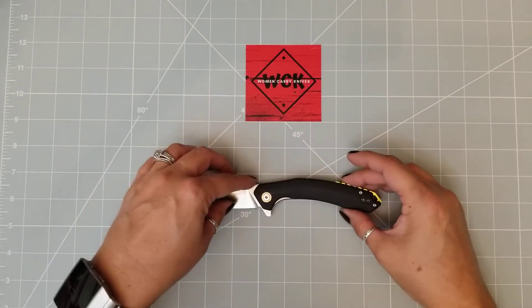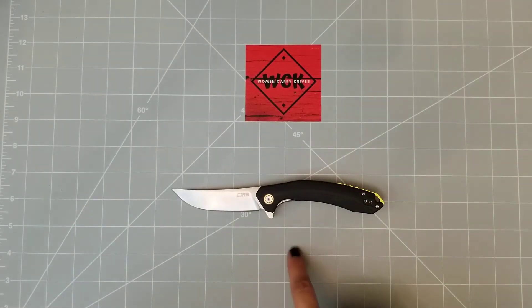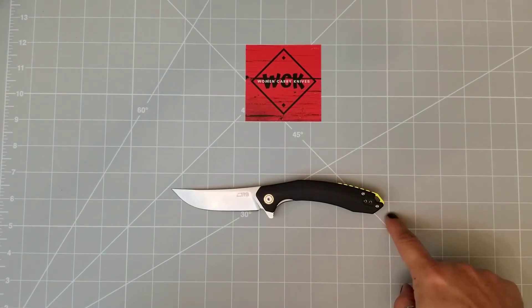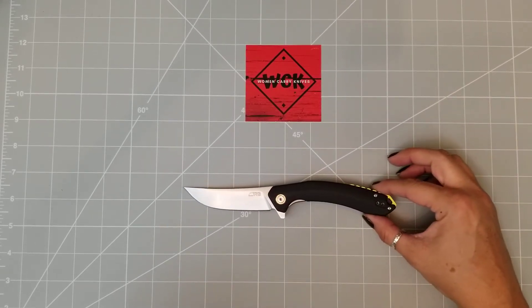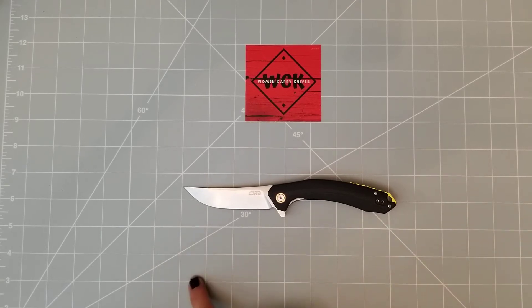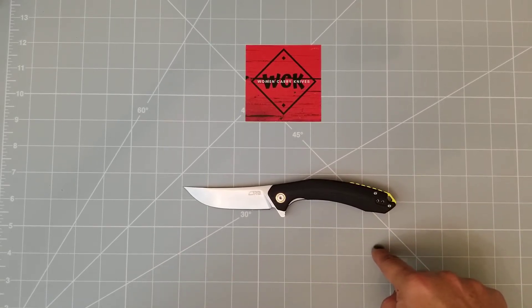Your total handle length on this is one, two, three, four, and a little bit over a half, maybe almost four and three quarter inch handle. So your total overall length is just over eight inches.